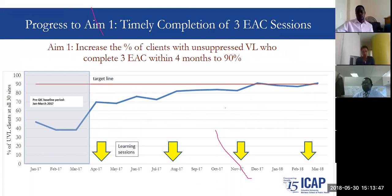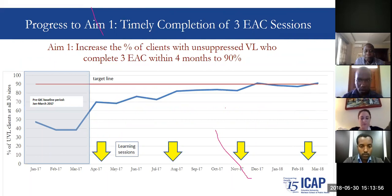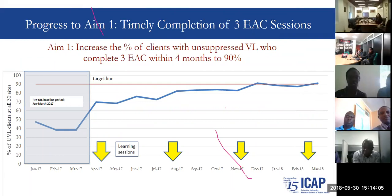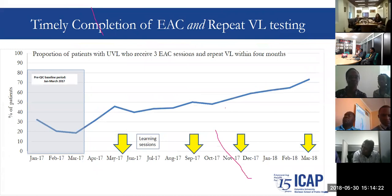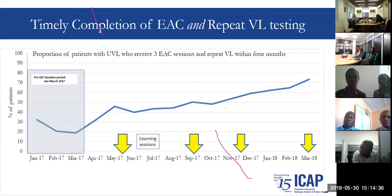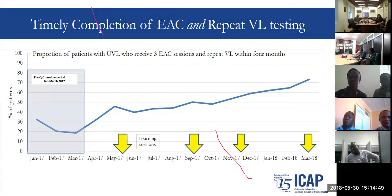This graph shows the trend of the first aim — increasing the percentage of clients with unsuppressed viral load who complete three ESCs within four months to 90%. Implementation started in April 2017. Looking at the graph, we are currently around 80% and hope to hit our target of 90% before learning session five. There has been tremendous improvement over time. For the second aim — timely switch to second line — we aimed to increase the proportion of clients with persistently unsuppressed VL switched to second-line within four months to 90%. We are currently at about 87%, with some ups and downs, but expect to hit our target by the end of the implementation phase.